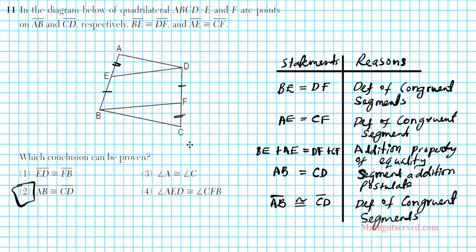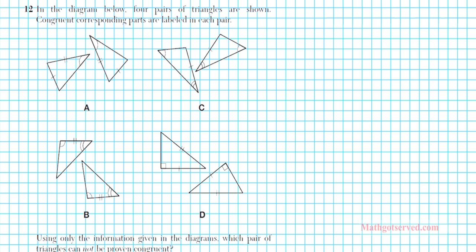Let's move on. Let's take a look at problem 12. It says: in the diagram below, four pairs of triangles are shown. Congruent corresponding parts are labeled in each pair. Using only the information given in the diagrams, which pair of triangles cannot be proven congruent? So, what are the congruency postulates that we have? What can we use to conclude that two triangles are congruent?